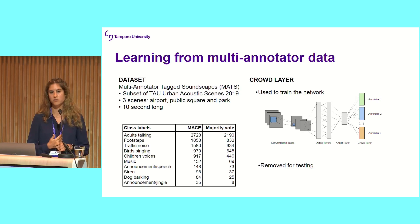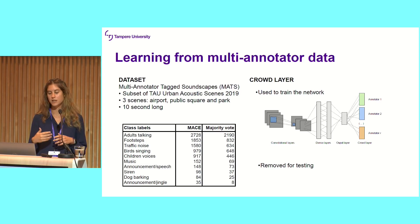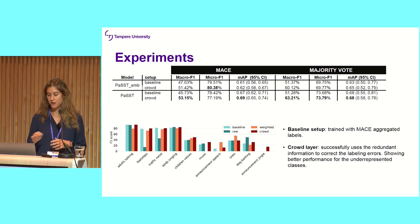The dataset we are using is the Multi-Annotator Tagged Soundscapes, a subset of the TAU Acoustic Scenes 2019, formed by three different scenes where each 10-second audio file is annotated by five different annotators. The crowd layer is added to the very end of the model and is only used during training — it receives labels directly from all the different annotators. Once you want to test your model, you can remove this layer. It serves as a bottleneck.